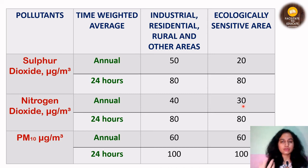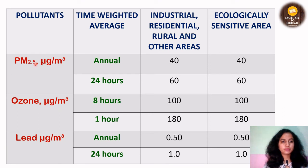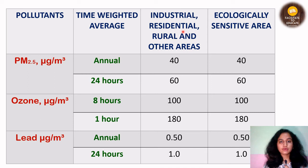You need to remember all the units and standards because these can be asked in any form for any of the given gases. For PM10, it is 60 microgram per meter cube annually for both industrial/residential/rural areas and ecologically sensitive areas. For 24 hours, it is 100 for both. For PM2.5, the unit is microgram per meter cube. Annually, for industrial, residential, and rural areas, it is 40, and for 24 hours it is 60. It is the same for ecologically sensitive areas.